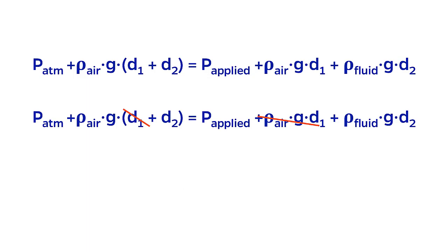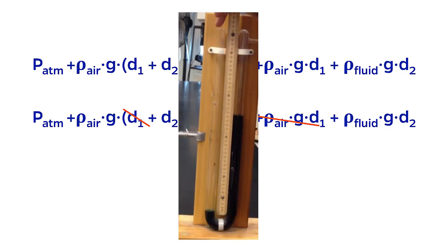We can simplify this equation by canceling rho air GD1, since it is the same on both sides. If you're really paying attention, you might have wondered why I didn't count the little column of dark liquid on the left when I was deriving the equation. But you can prove that this will cancel, similar to why the air term cancels.